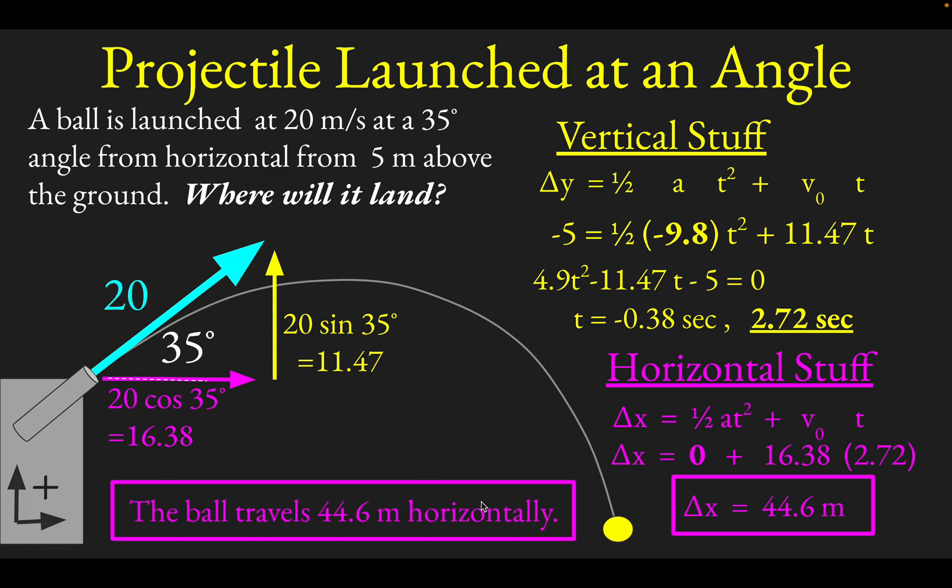Recapping, the key really is to separate the vertical motion from the horizontal motion and make sure you're careful about following your own sign convention that you chose. For example, if I had chosen positive down, then my Δy would be positive five, my acceleration would be positive 9.8, and my v_initial in that case would be negative 11.47. That would still be correct—it's just a different way to solve the problem. Hopefully you find that helpful, and thanks for watching.